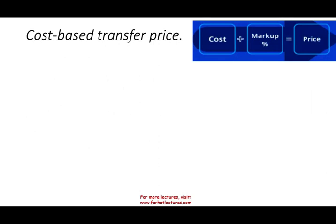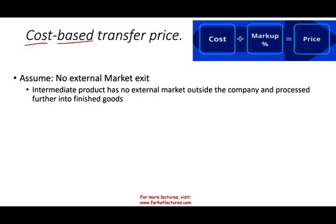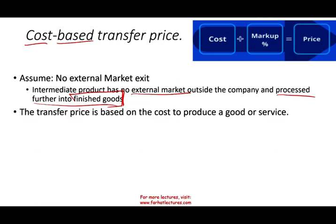As the word suggests, Cost-Based means we start with cost. The first assumption is there's no external market. The intermediate product being sold between subsidiaries, or from subsidiaries to the parent or parent to subsidiaries, has no external outside market and has to be processed further until it becomes finished goods. Once it's finished goods, it's supposed to have a market price. So the transfer price is based on the cost to produce the service.